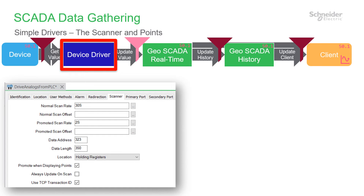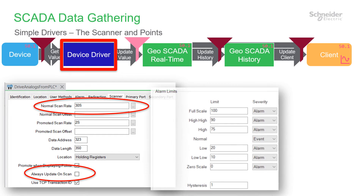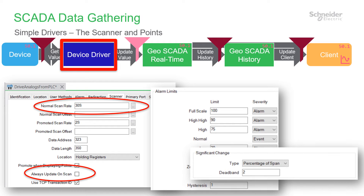Starting with the simple driver, let's look at the scanner. You'll want the normal scan rate to be fast enough for operators to respond to alarms. You don't need to select the Always Update on Scan checkbox, unless you need the scanner statistics to update every scan, which could be a resource problem. For digital points, there's usually nothing extra to configure — you'll get to see state changes and there are no timed reports. For analog points, you need to set the alarm thresholds so you know when the value crosses them. Also, you configure significant change so you can see when the value moves. Note that for these percentage fields, enter 1 for 1%, not 0.01.